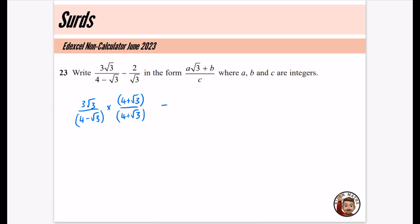And then for the next part, we have our 2 over √3. And to rationalize that one, this one's really simple. You just multiply by the same thing to the numerator and the denominator. So we get our √3 over √3. Okay, let's work on this first part.